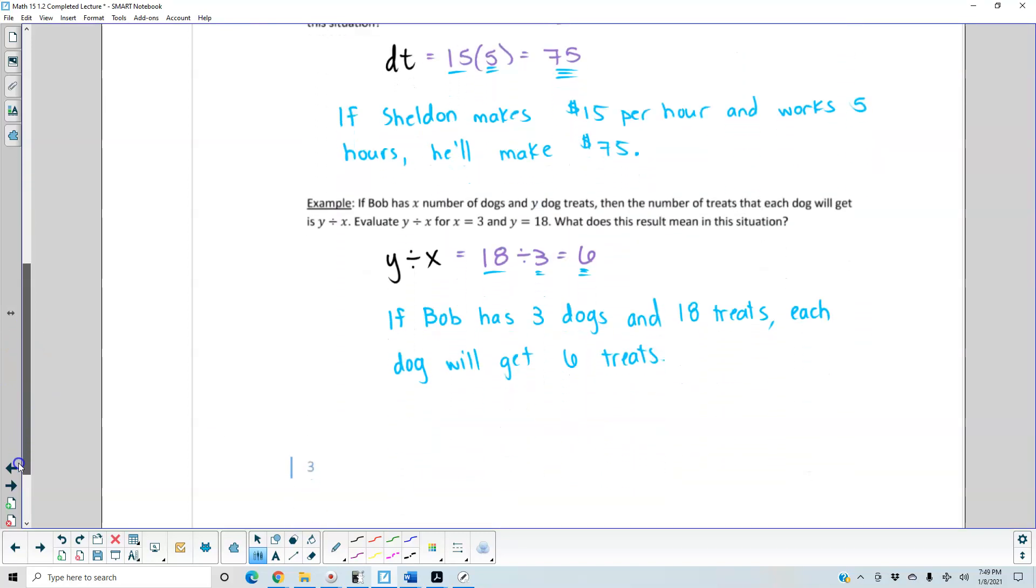Next example. If Bob has x number of dogs and y dog treats, then the number of treats that each dog will get is y divided by x. We want to evaluate y divided by x for when x equals 3 and y equals 18. And then, what does this result mean in this situation?